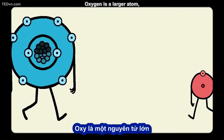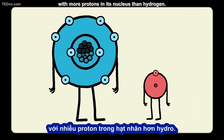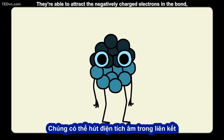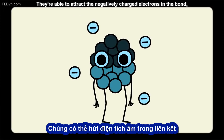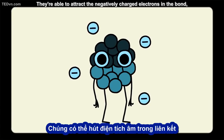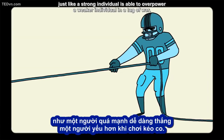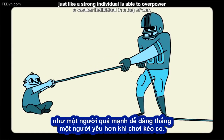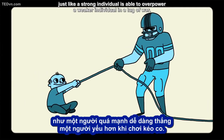Oxygen is a larger atom with more protons in its nucleus than hydrogen. These positive charges are like a person's physical strength — they are able to attract the negatively charged electrons in the bond, just like a strong individual is able to overpower a weaker individual in a tug of war.